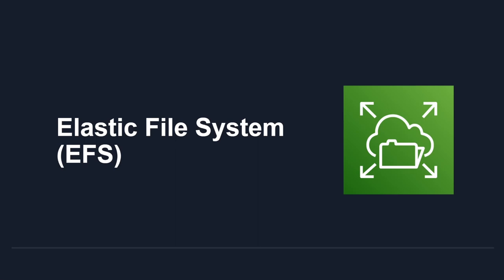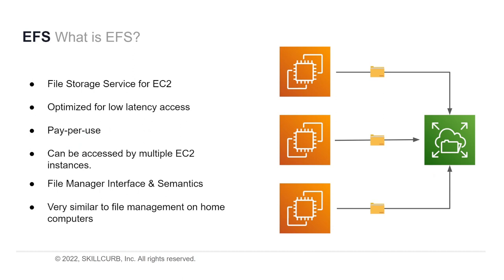Elastic File System, or EFS. EFS is the file storage service we associate and use with EC2. The service is optimized for lower latency access than other storage types. It follows a pay-per-use model — no signup cost, no minimum fee, and you only pay for what you use. One of the beauties of EFS is that it can be hooked up to multiple EC2 instances, allowing them all to access a shared set of global files.